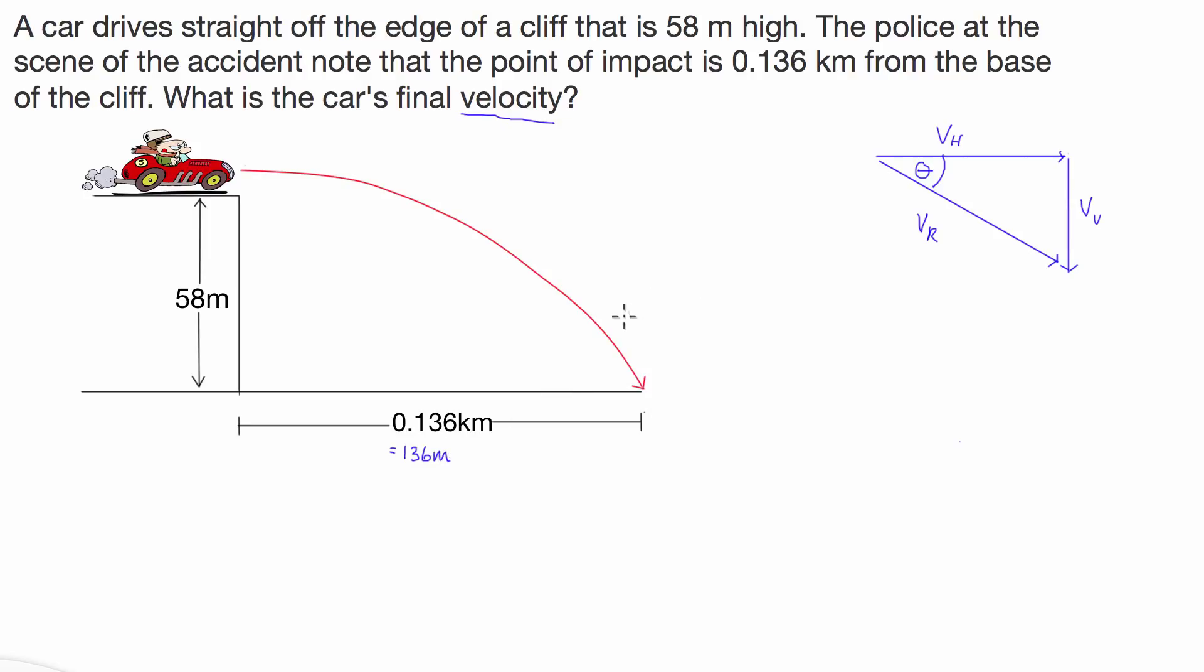Great, and that's all the information that we've been given. Now the first thing that we can calculate is the time that this car is going to spend in the air. The way we can do that is because we know that at the point where he flies off the cliff, his vertical velocity is equal to zero. As a result, we can calculate how long it's going to take gravity to accelerate him 58 meters towards the ground.